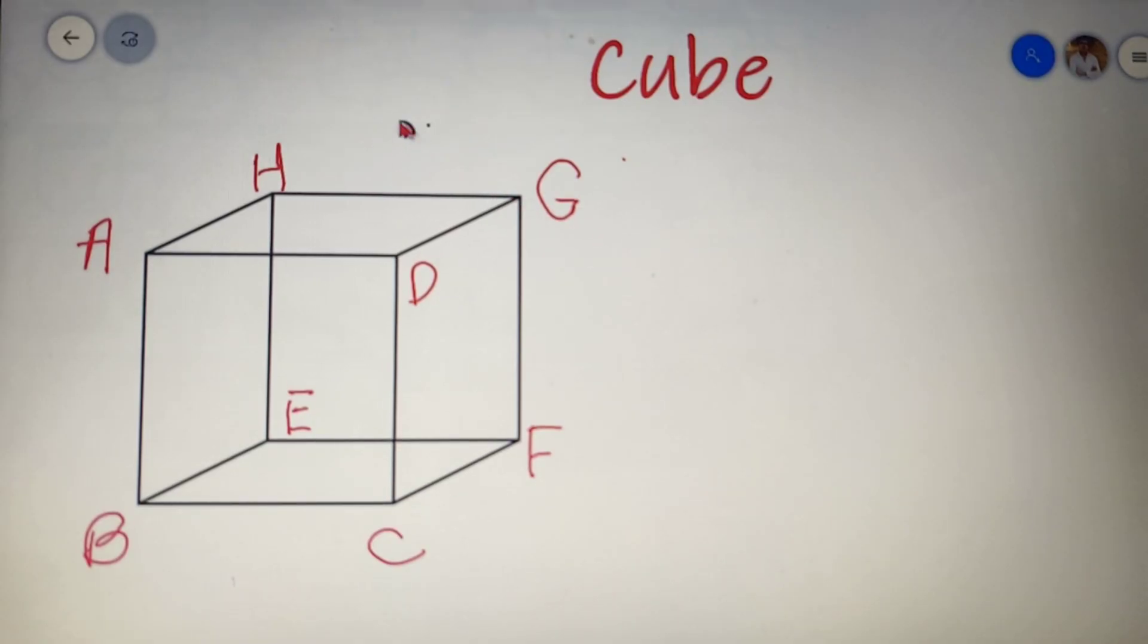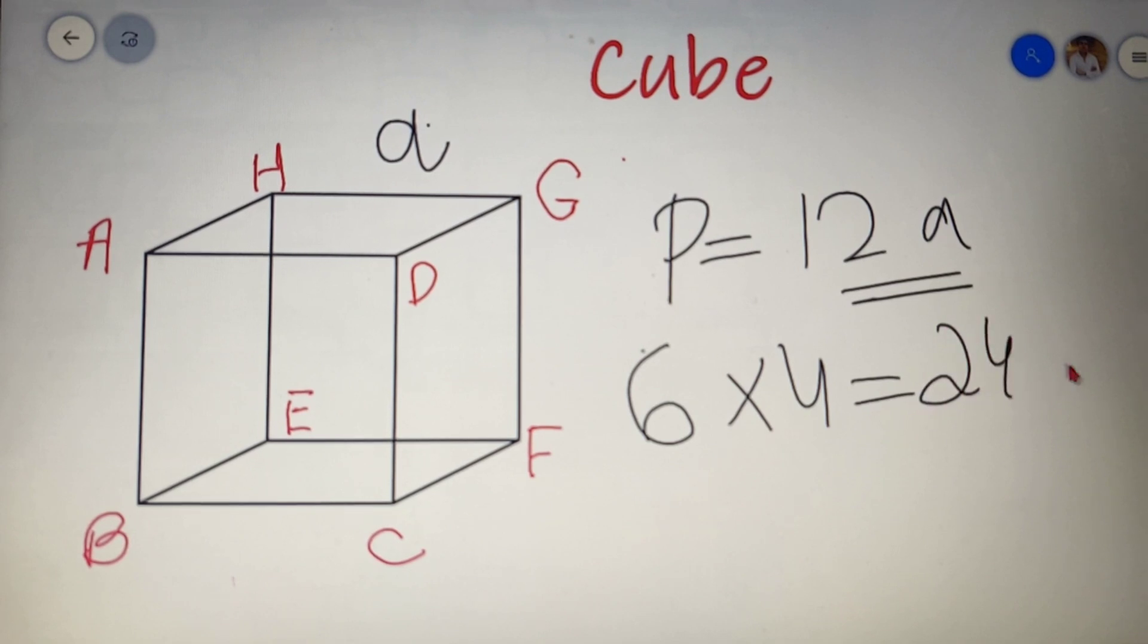If we take the length of the side of a cube as A, then I can say that the perimeter of the cube is equal to 12A. Now you may think that if a cube is made up of 6 faces and each face has 4 sides, then the perimeter should be equal to 24A, but that is not the case. This is because each side is shared by 2 faces, so we have to divide the total by 2. So we get that the perimeter of a cube is equal to 12A.